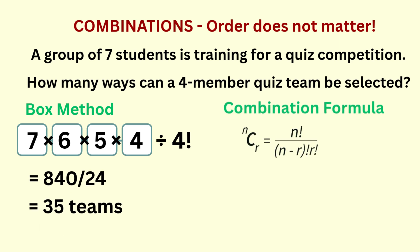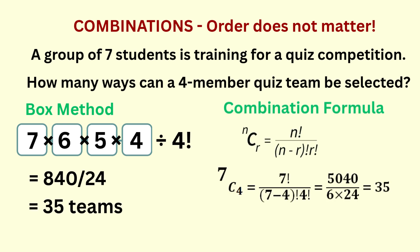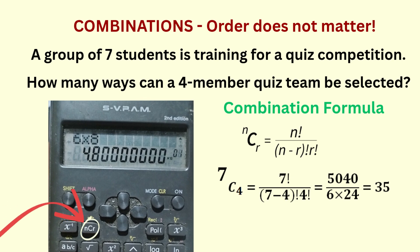If we are using the formula, we substitute 7 for n and 4 for r. So 7C4 is 7 factorial over 3 factorial times 4 factorial — we get the same answer: 35 teams. By the way, on the calculator you can enter 7, then the NCR button, then 4, then the equal sign, and you should get 35.